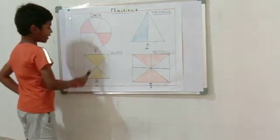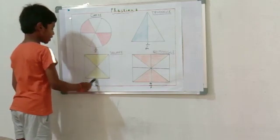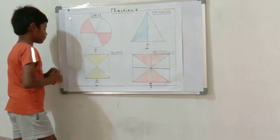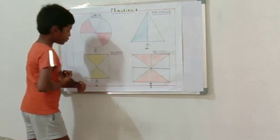Square is divided into 4 equal parts. 2 parts are shared. So the fraction of the shared part is 2 by 4.